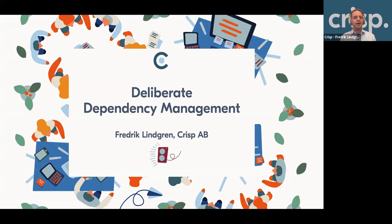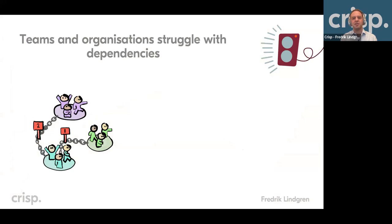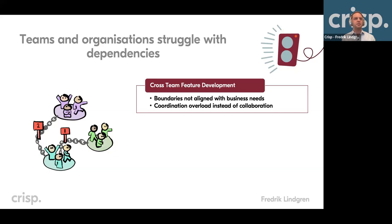Today I want to talk about dependency management and how to be deliberate about it. I see a lot of teams and organizations that struggle with dependencies. It can be many different kinds of dependencies and struggles. One thing that is quite common is that the organization is structured so that to get something out, you have to coordinate a lot of teams — so you have dependencies between teams.